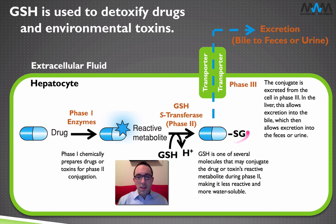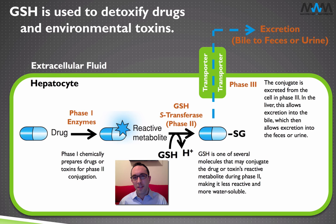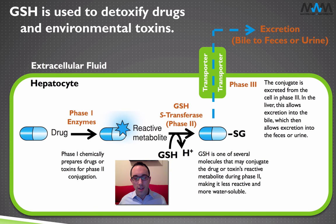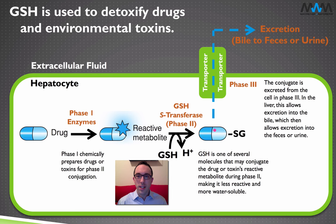This conjugate is, first of all, much safer to have around than that reactive metabolite. If you had an imbalance favoring too much phase one and not enough phase two, that could actually cause damage to the cell because the reactive metabolites are so dangerous. Glutathione conjugation quells that dangerousness, but more importantly in the overall scheme, it's making the drug more water-soluble and easier to excrete. Phase three is a transporter that takes the conjugate and puts it out into the bile, from where it can eventually be excreted either in the feces or the urine.